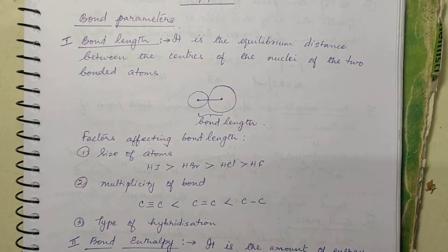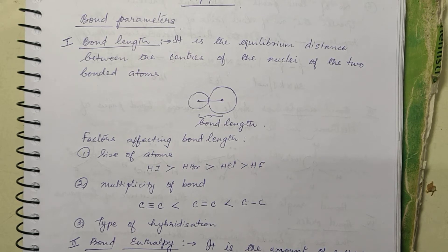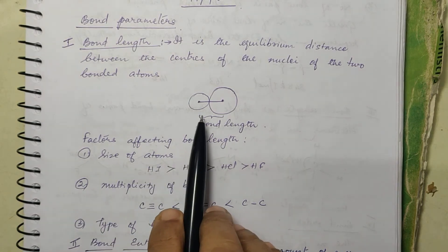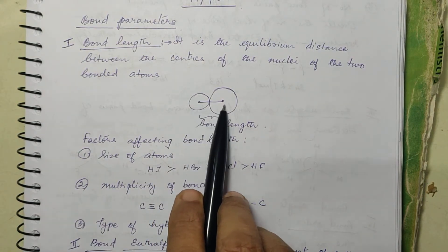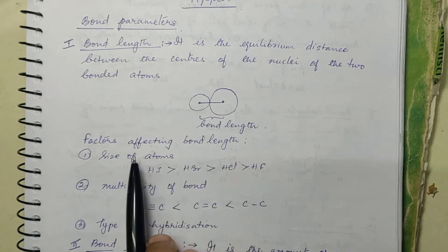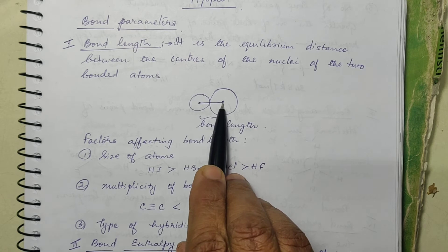Today let us see about bond parameters. The first one is bond length. Bond length is the equilibrium distance between the centers of the nuclei of the two bonded atoms. These are the two bonded atoms; this is the center of the nucleus of that atom, and you join the centers — that is called bond length.